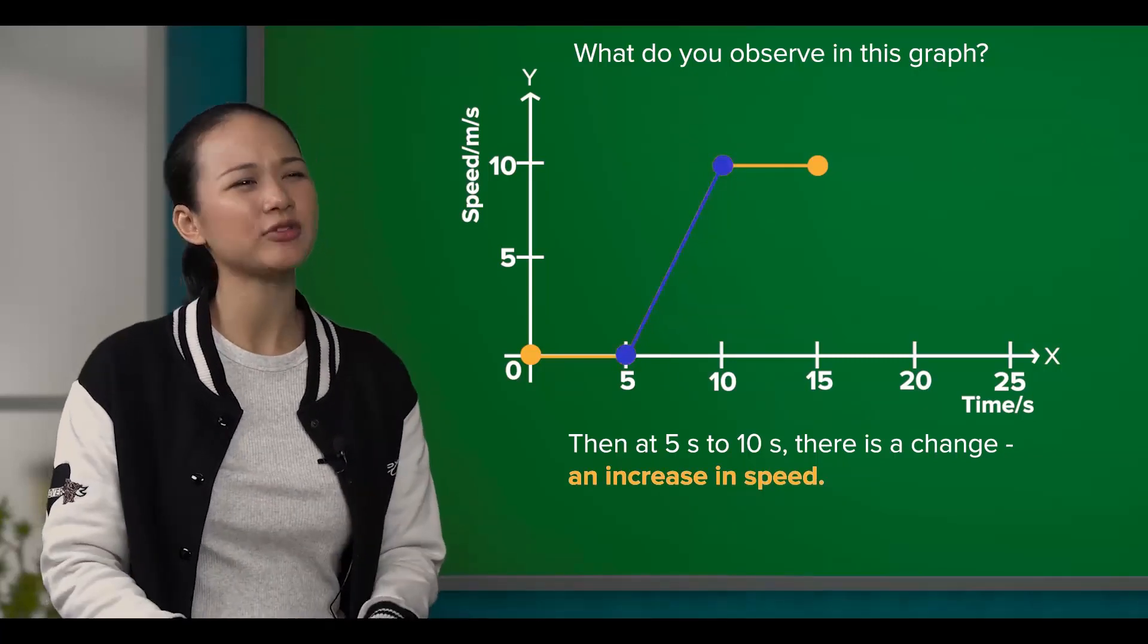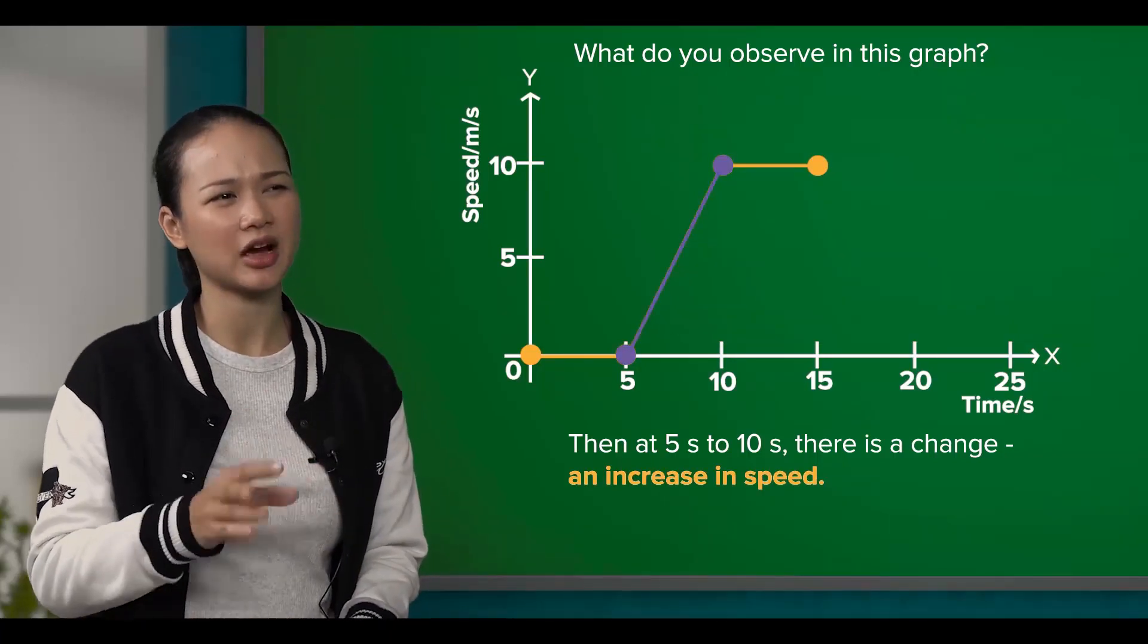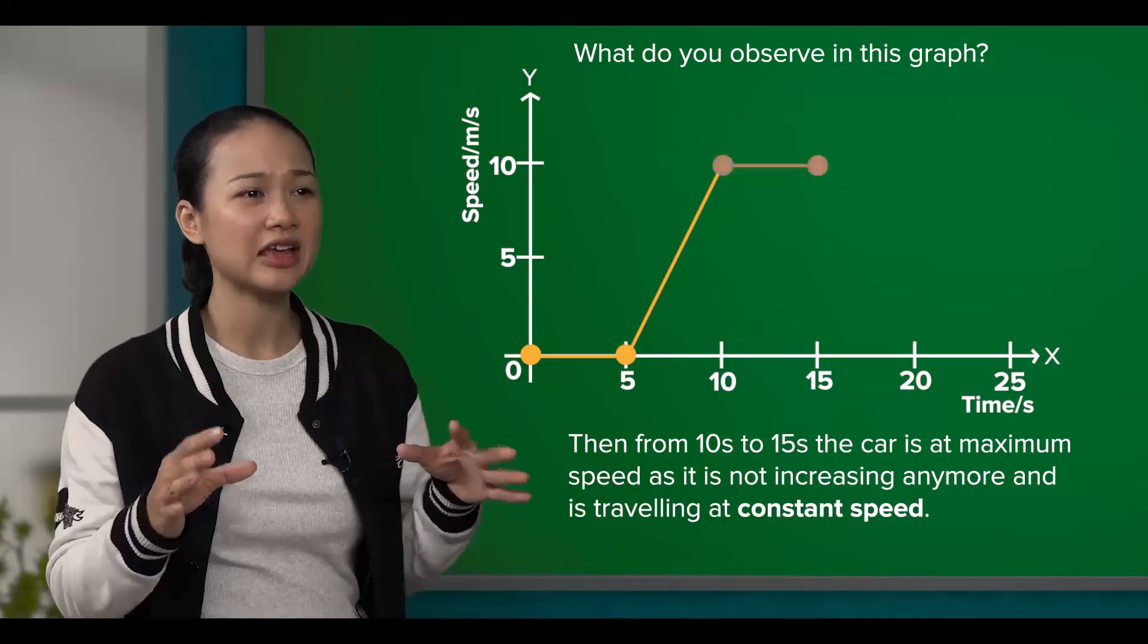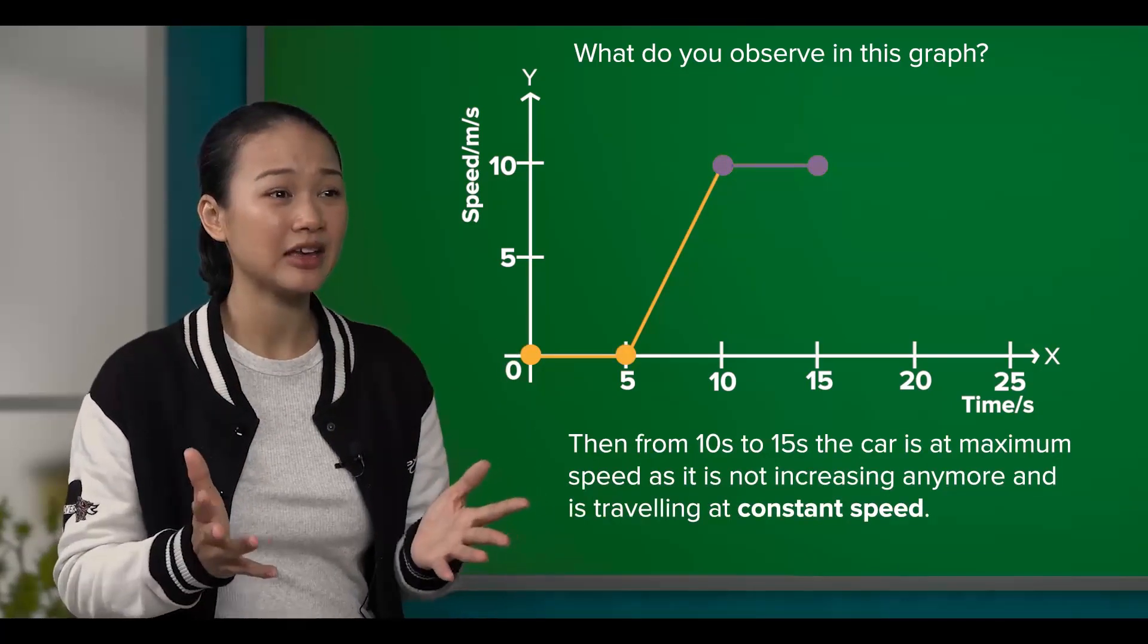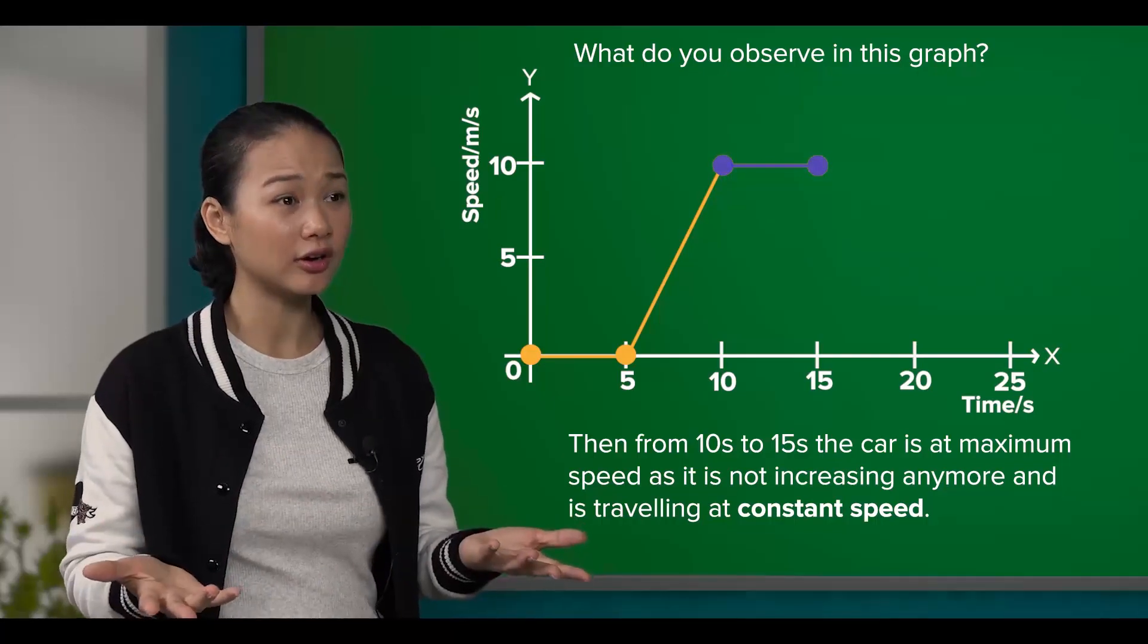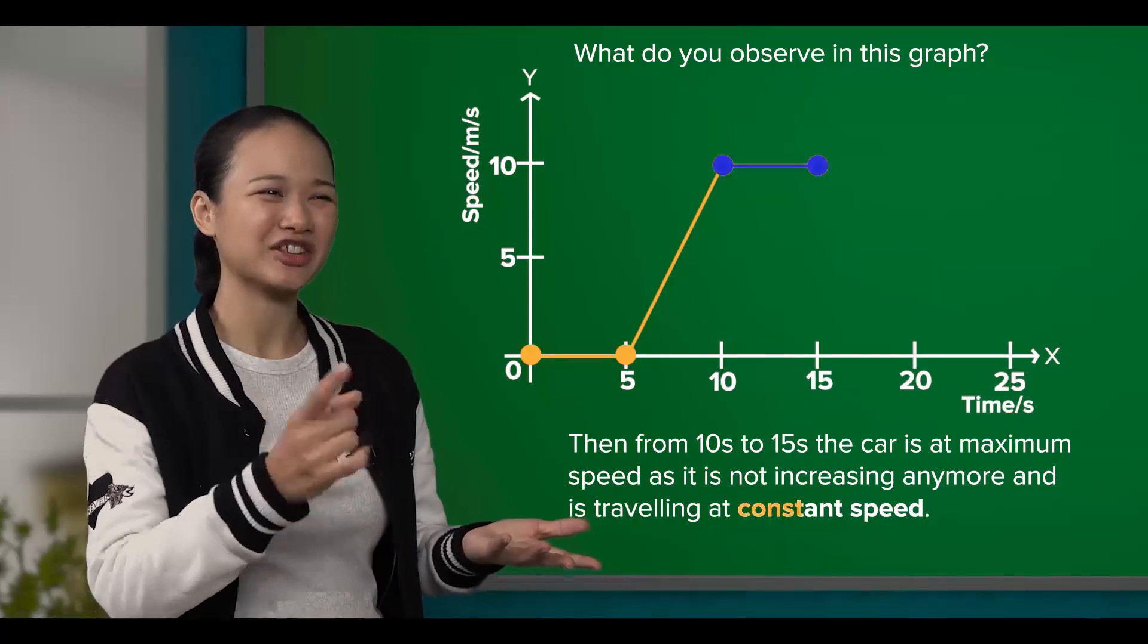Thus, I probably released my car at the 5 second mark. Then from 10 seconds to 15 seconds, the car is at maximum speed as its speed is not increasing anymore, and it's travelling at constant speed.